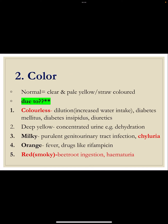The normal color of urine is clear and pale yellow, also called straw colored, due to the presence of urochromes, along with urobilins and uroerythrins. Colorless urine is seen when urine is very much diluted — due to increased water intake, diabetes mellitus, diabetes insipidus, or diuretics.